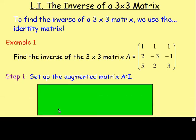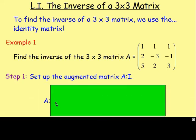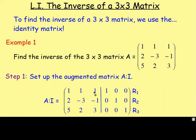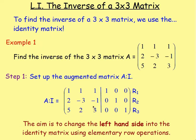The aim of the game is to change the left-hand side into the identity matrix using a series of elementary row operations. This should hopefully remind you of what we did at the very start of this chapter when we were working with Gaussian elimination. It's the same idea.